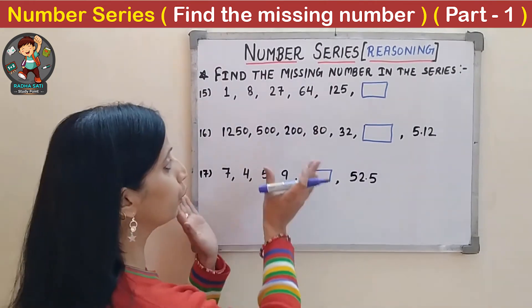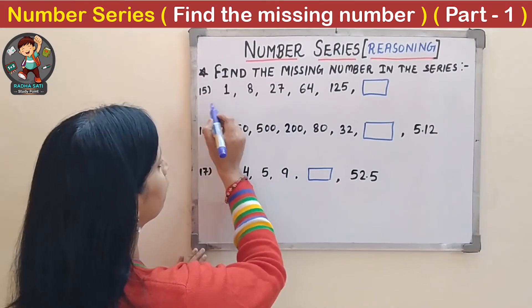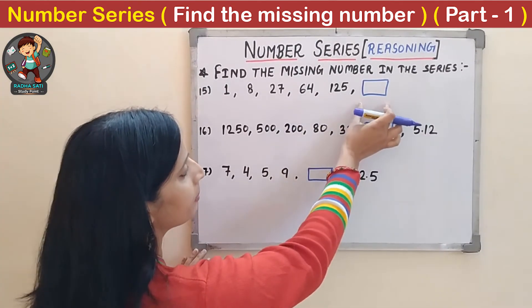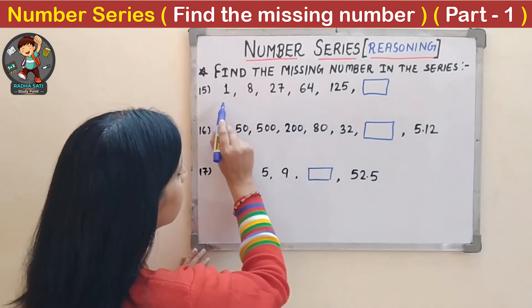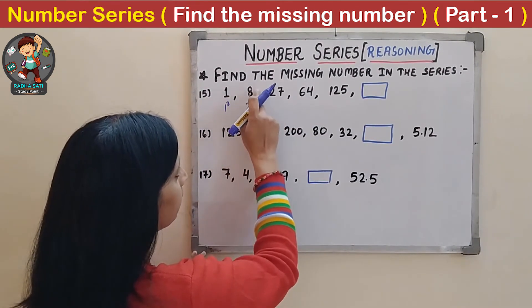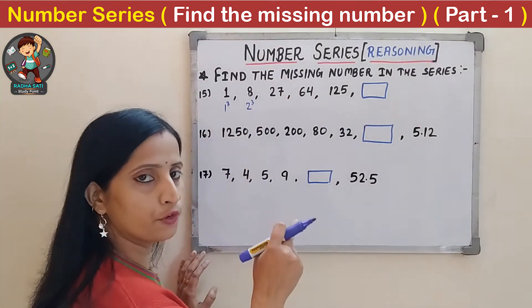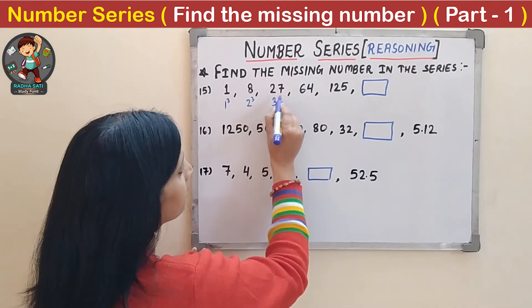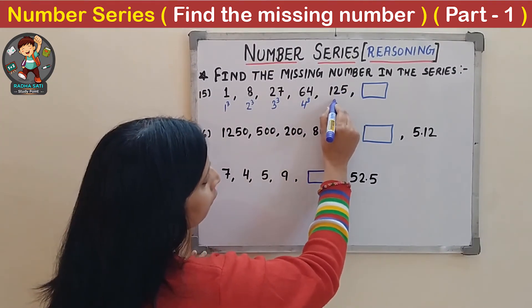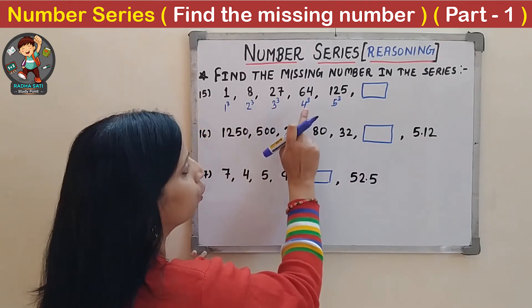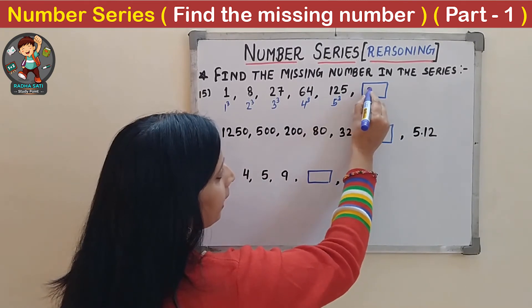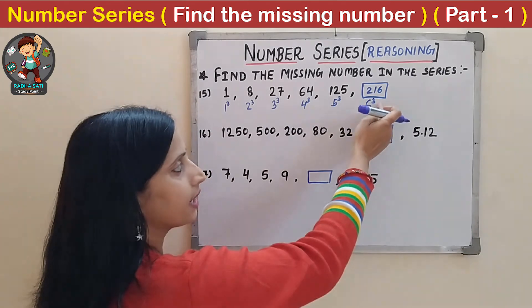Fifteenth question: 1, 8, 27, 64, 125, _. These are cubes: 1³=1, 2³=8, 3³=27, 4³=64, 5³=125. The next is 6³=216. The missing number is 216.